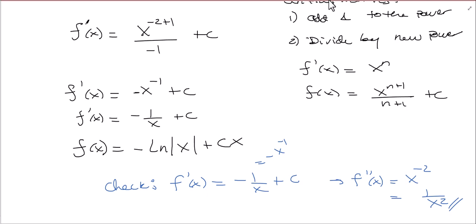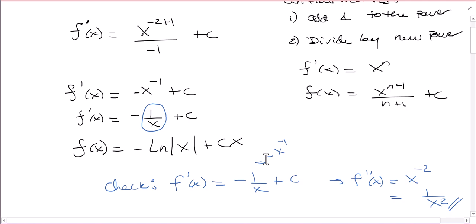The one thing to be really mindful of is when you have x to the minus 1: if you try to do the general power rule, it's not going to work. You have to write it as 1 over x. Then you can recognize that 1 over x is the derivative of natural log of x. So the antiderivative is natural log of absolute value of x, because the domain of natural log requires positive numbers.